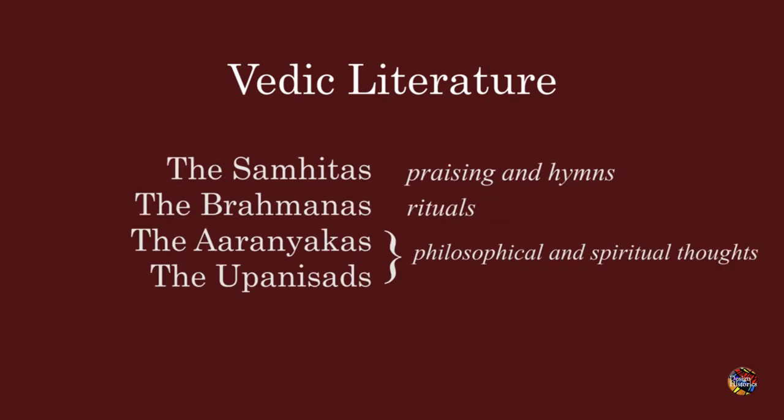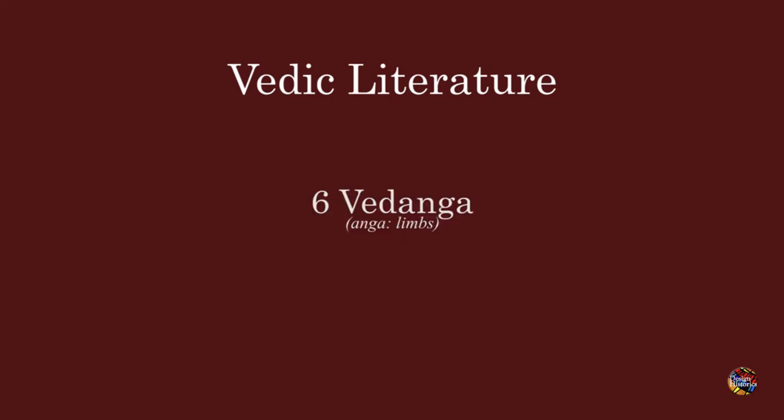Each Veda is divided into four parts. The Samhitas mostly contain hymns and praises of Gods. The Brahmanas contain information about rituals. The Aranyakas and Upanishads contain philosophy and spiritual knowledge about the soul and Brahma.